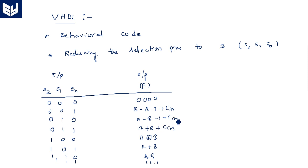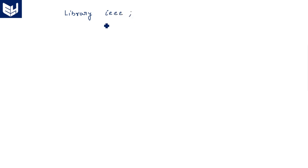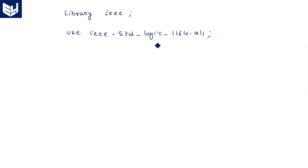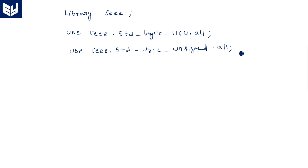Now we are going to write the VHDL code in behavioral model for these operations. First, the library declaration: library IEEE; use IEEE.std_logic_1164.all. As we are performing arithmetical operations we should also include another package: use IEEE.std_logic_unsigned.all. This package is very important when performing arithmetic operations. If any negative operations are involved then you should definitely use the signed package. Now coming to the entity declaration.